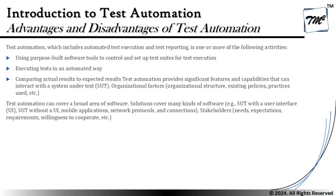The very first thing we are looking at is the advantages and disadvantages of automation. Key activities include automated test execution and test reporting. It includes using purpose-built software tools to control and set up test suites and test execution, executing tests in an automated way, and comparing actual results to expected results. Test automation provides significant features in these areas.